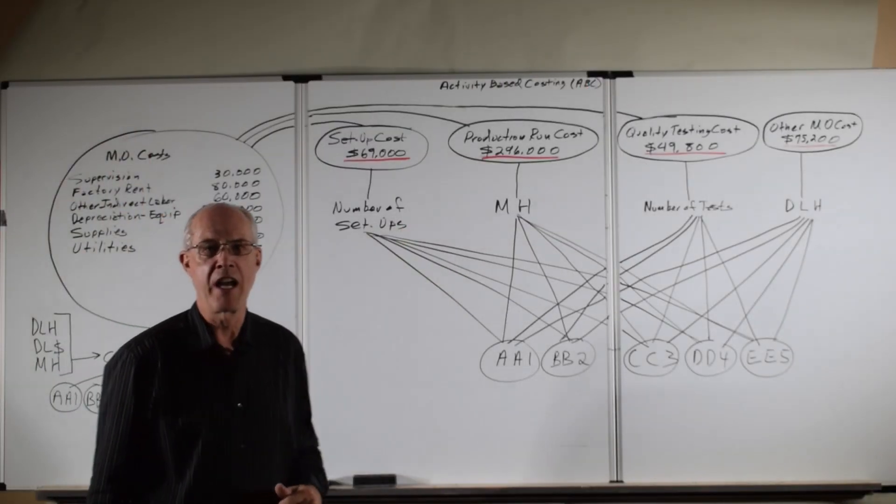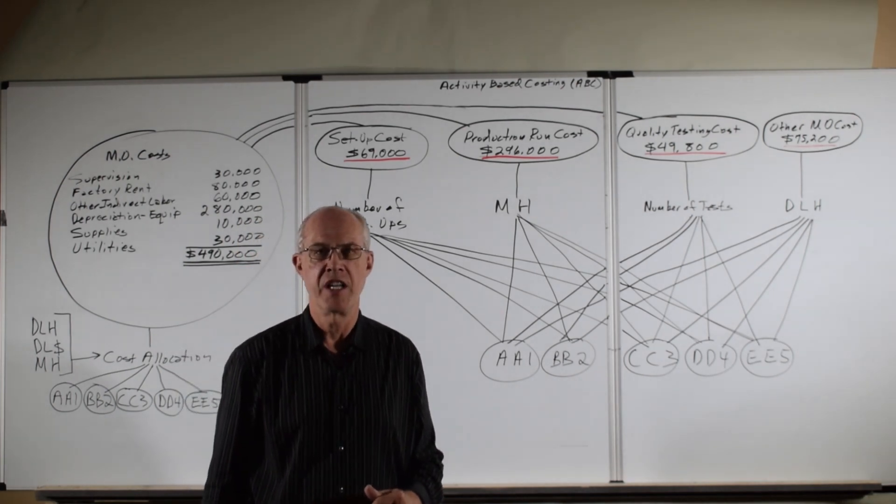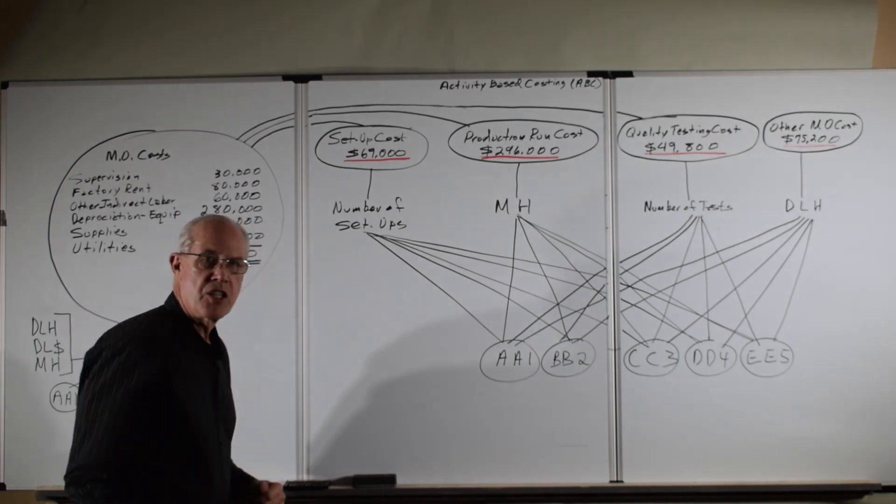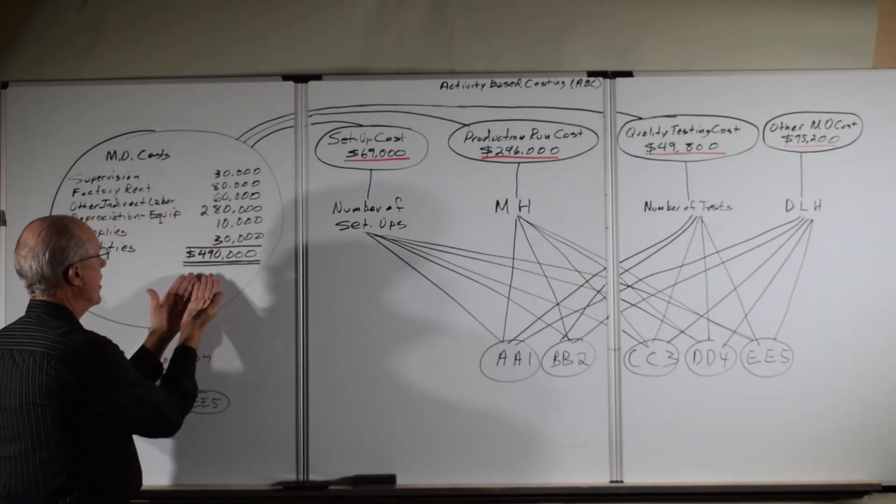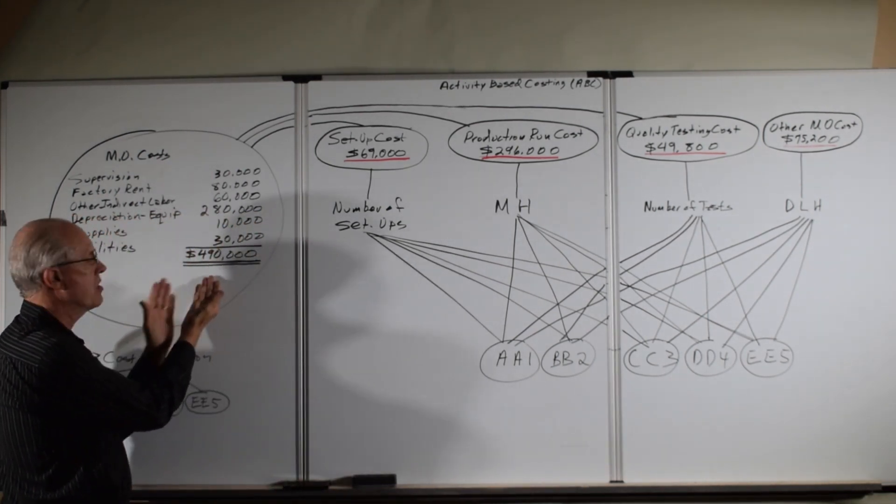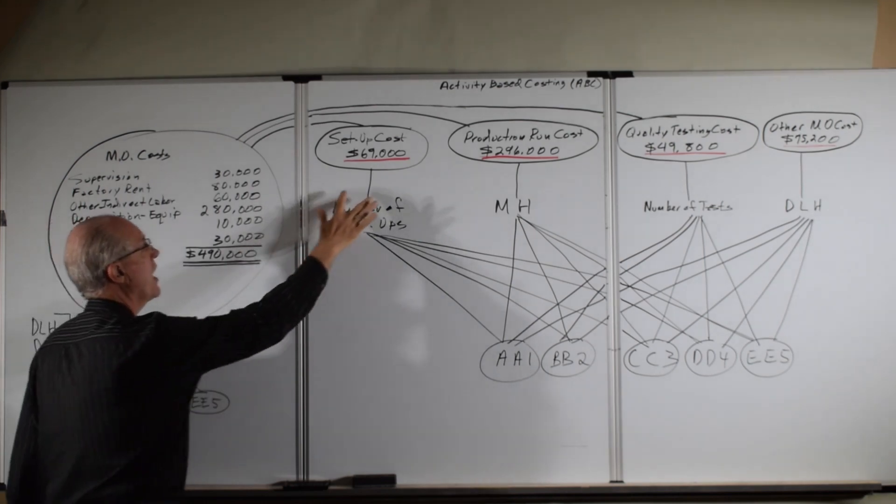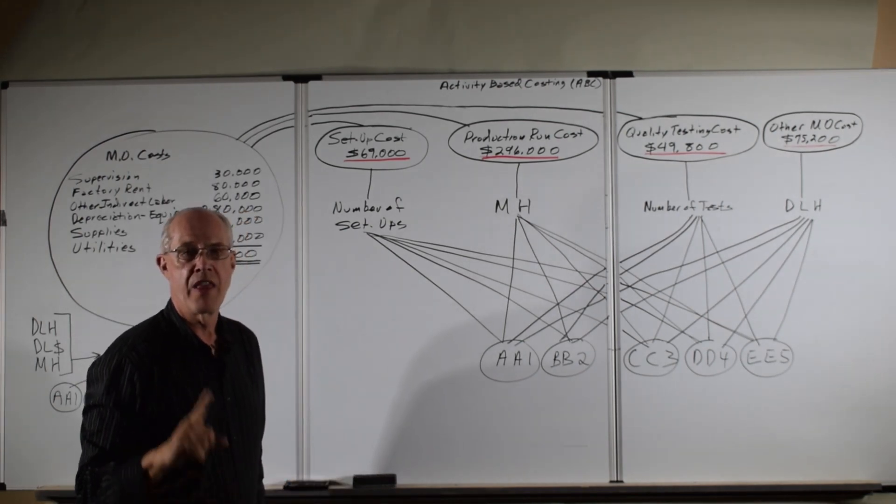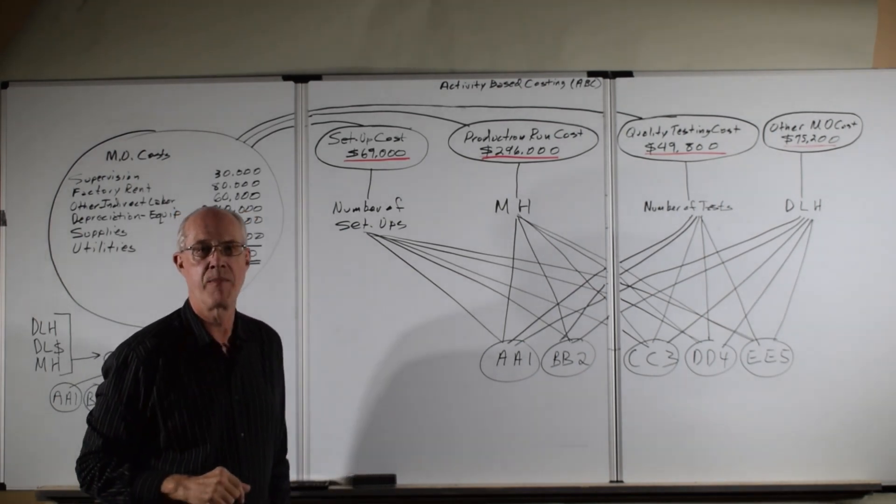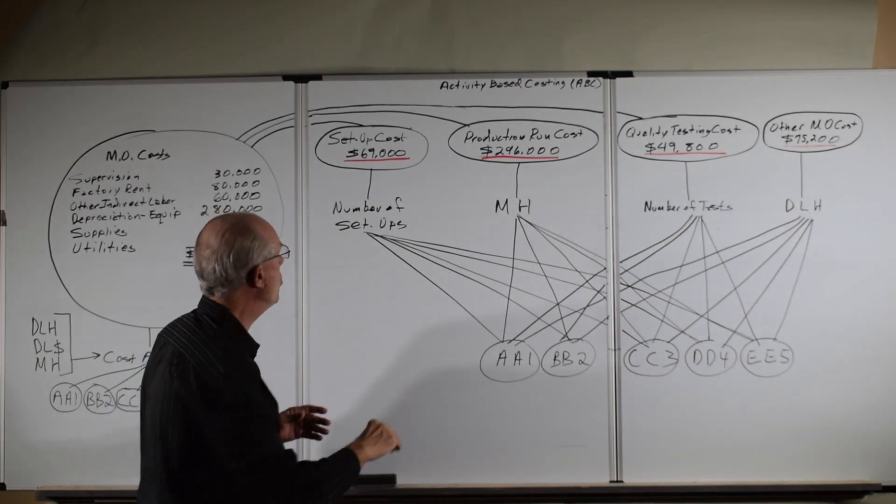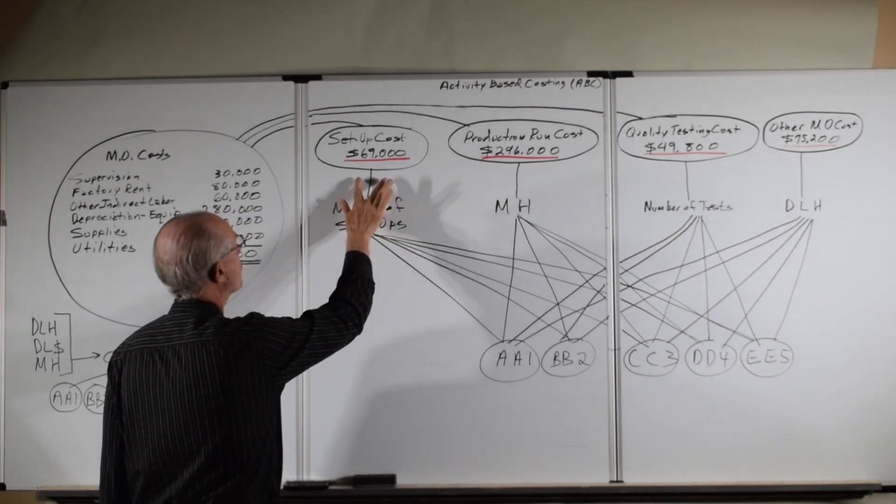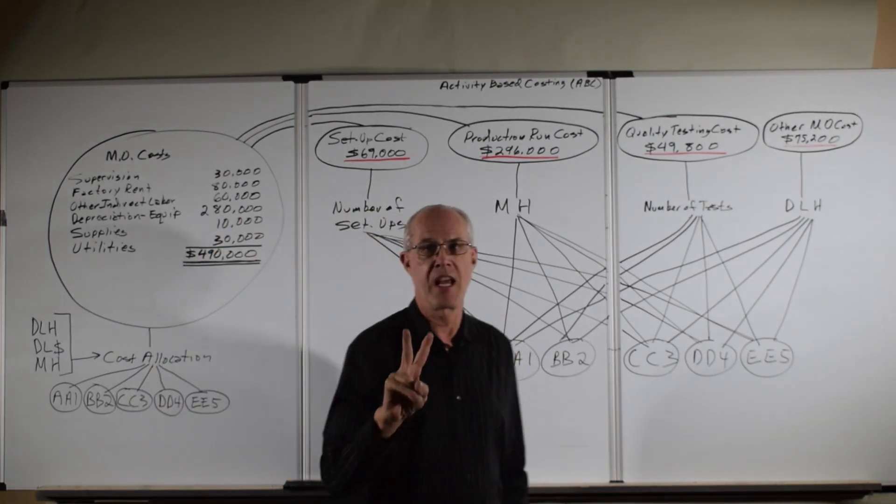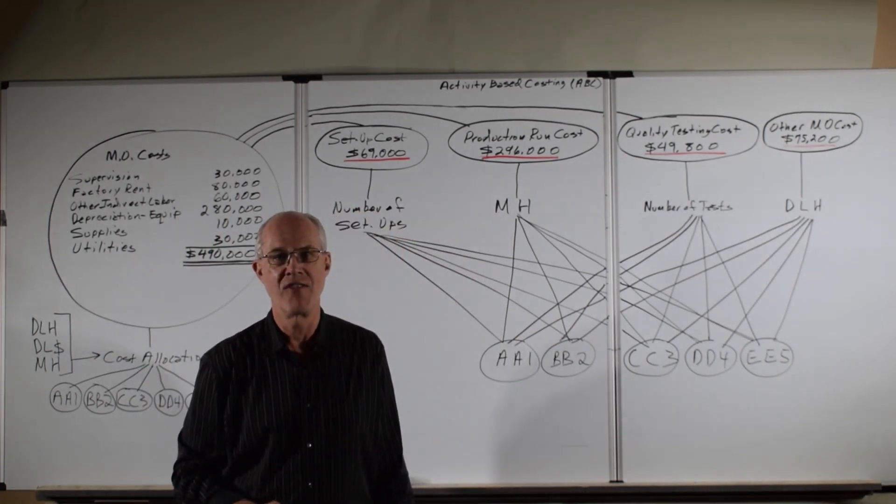Hi everybody, and welcome. I'm Mike Werner, and in this video we're going to continue our look at activity-based costing, focusing on stage one allocation. We're going to take the total manufacturing overhead cost of $490,000 and allocate it to the separate activity cost pools. That is stage one of the activity-based costing allocation system. Stage two would be allocating the cost from the activity pools down to the products themselves. That's going to be covered in the next video.